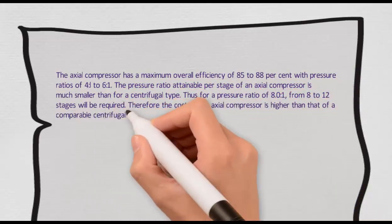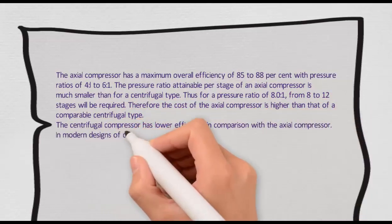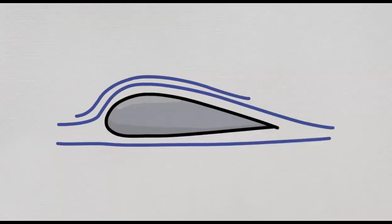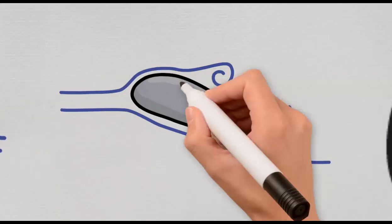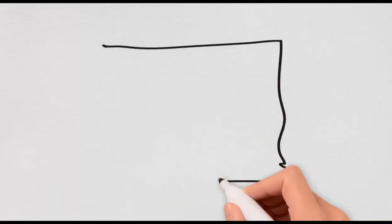The pressure ratio attainable per stage of an axial compressor is much smaller than for a centrifugal type. Thus for a pressure ratio of 8, from 8 to 12 stages will be required. Therefore the cost of the axial compressor is higher than that of a comparable centrifugal type.